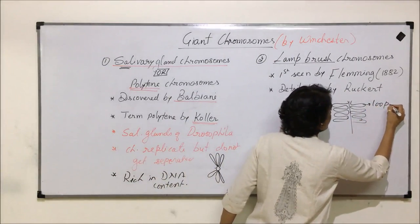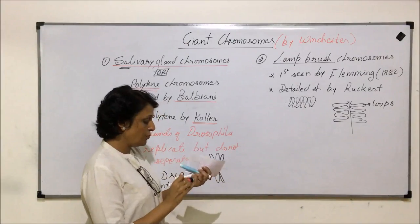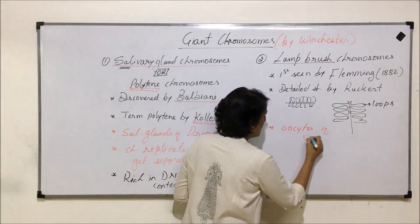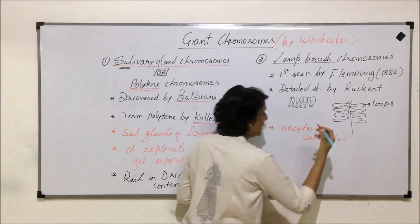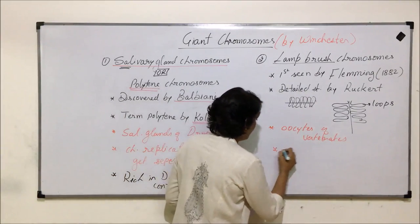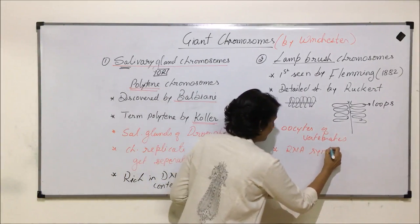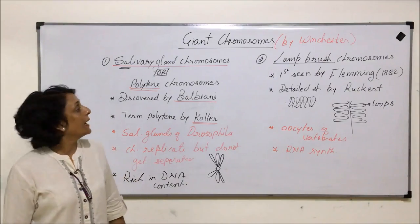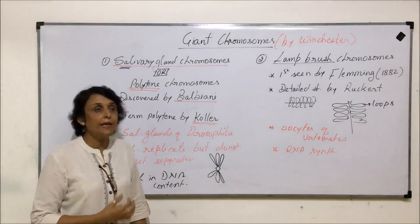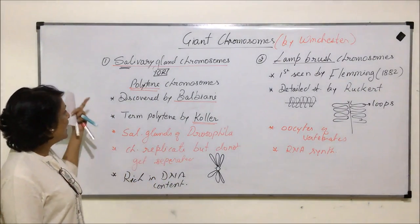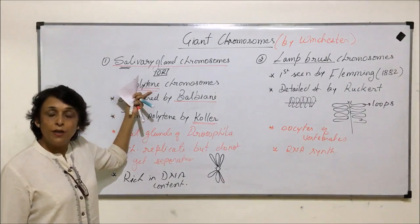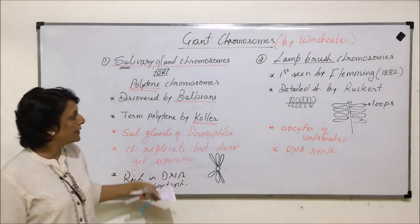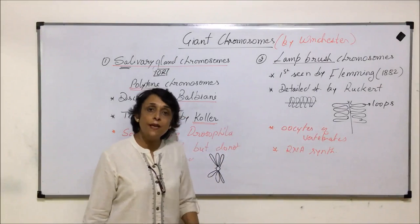These chromosomes are found in the oocytes of vertebrates, and their main function is to help in RNA synthesis. They contain rich RNA — the loops in particular are richer in RNA. Structure-wise they look very big, which is why they are called giant chromosomes. They are named after the structure they resemble: the lampbrush chromosome, because it looks like a lamp brush.